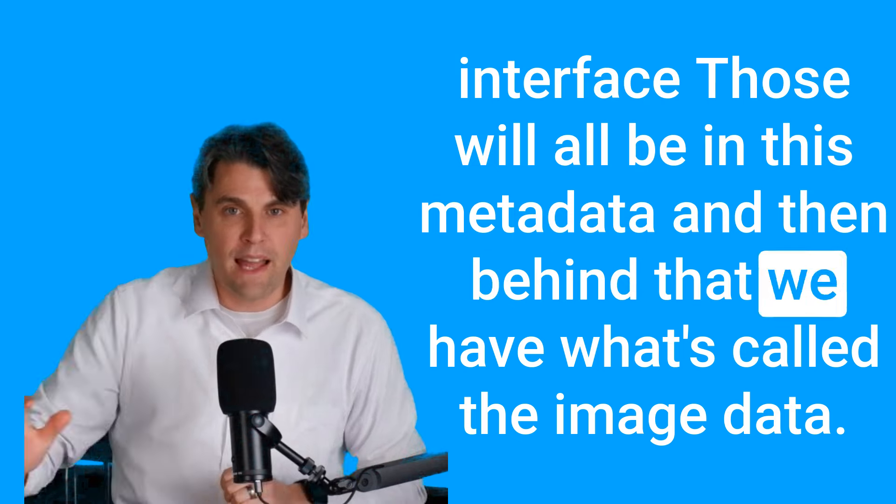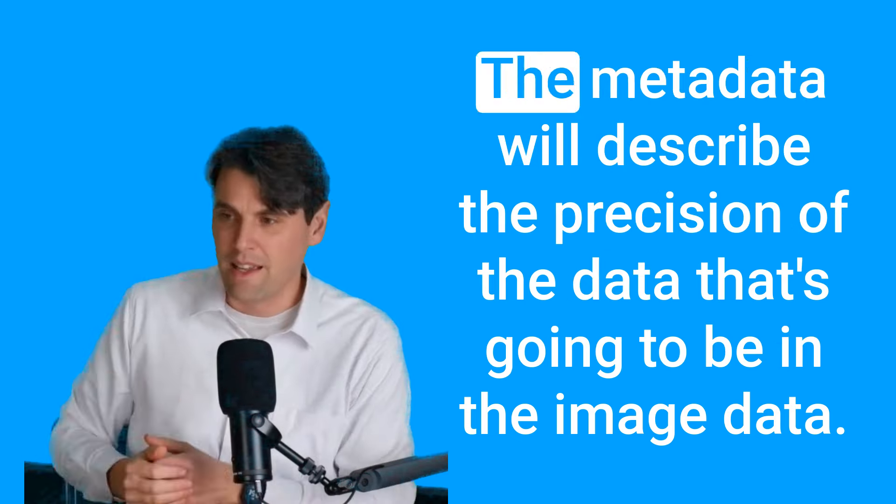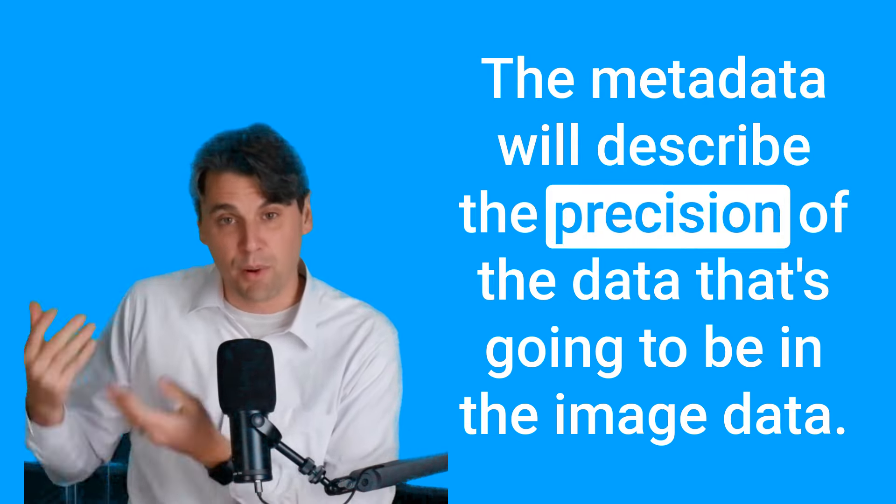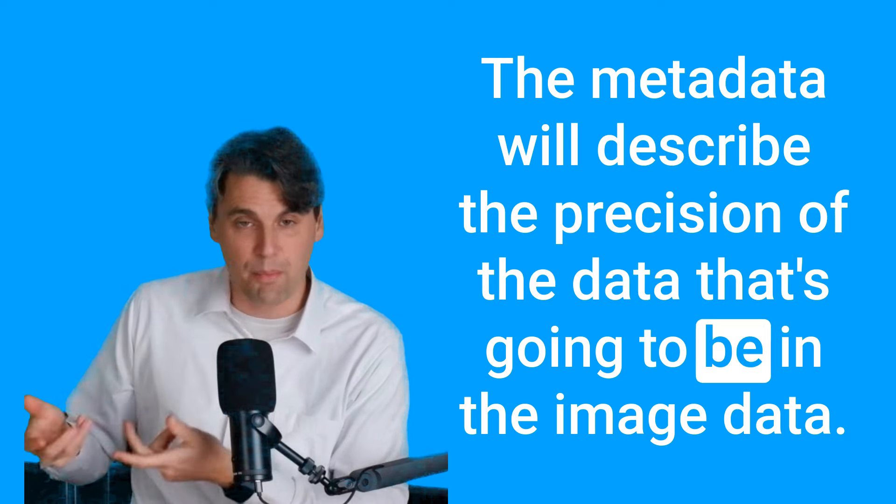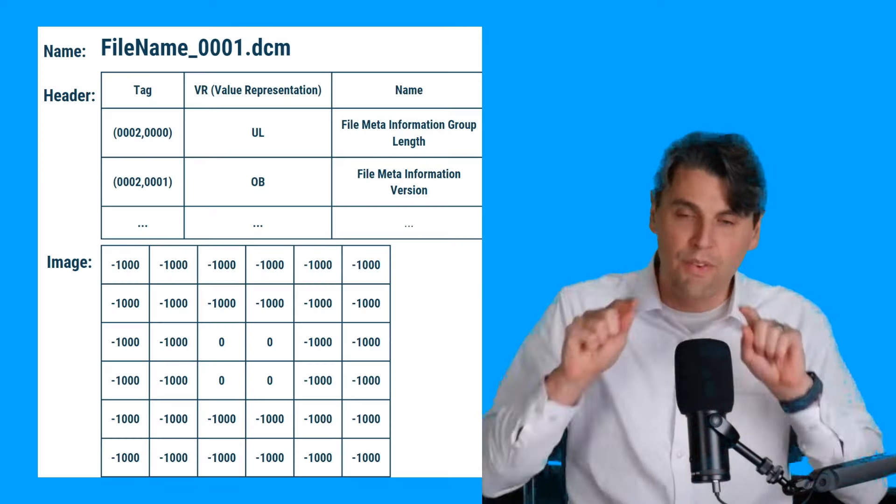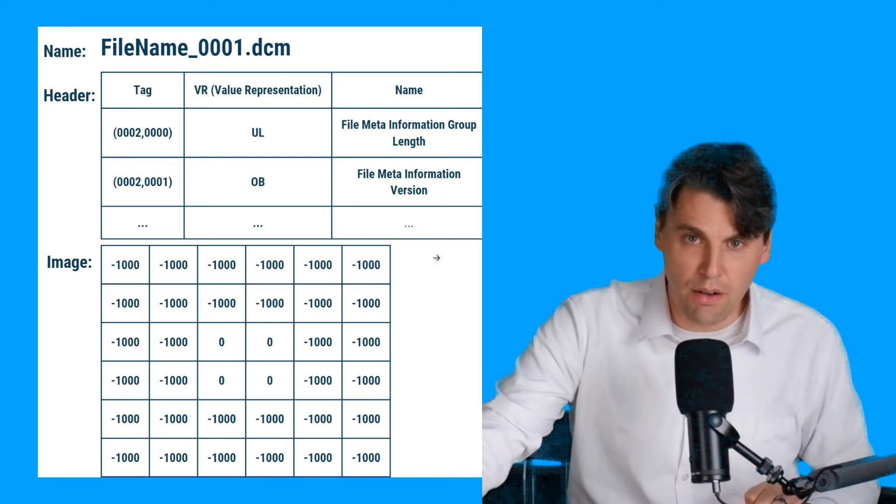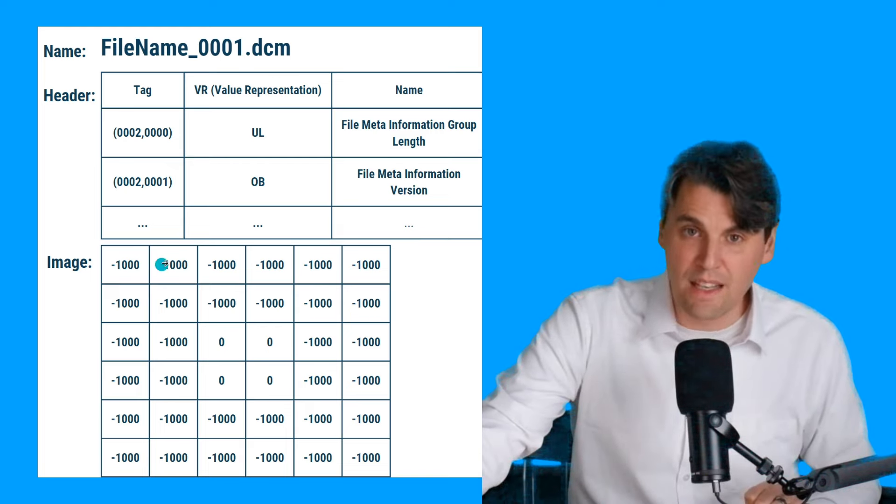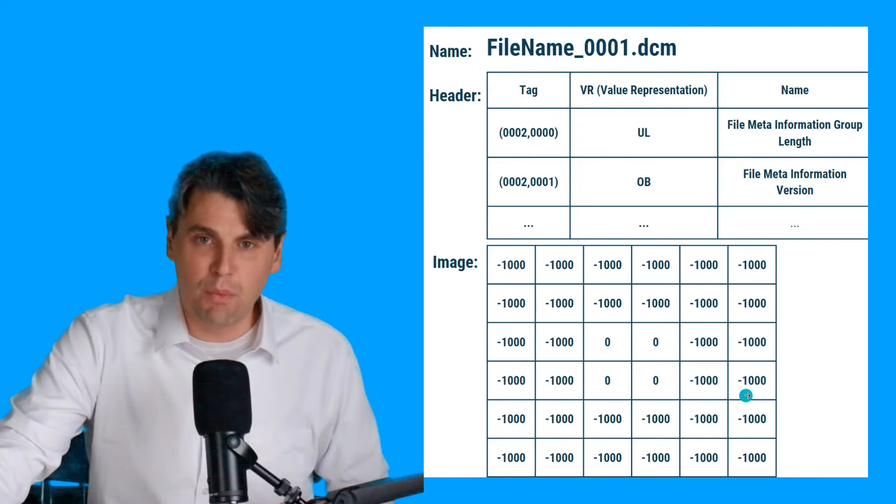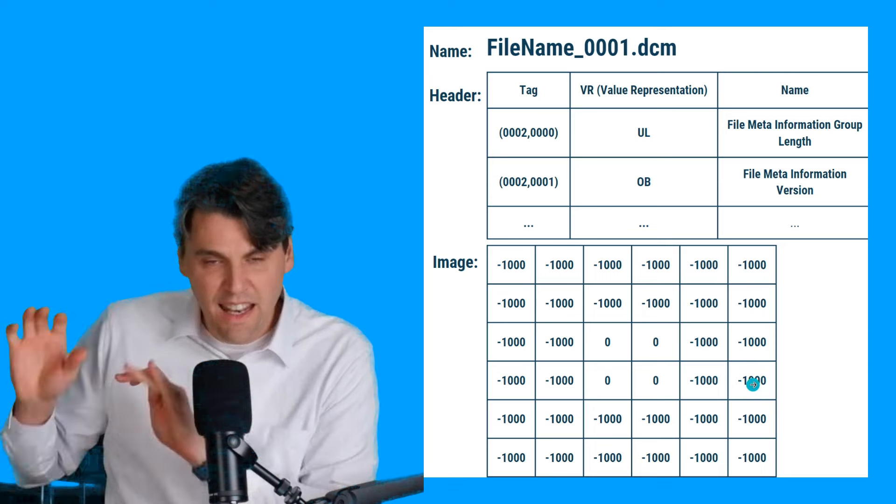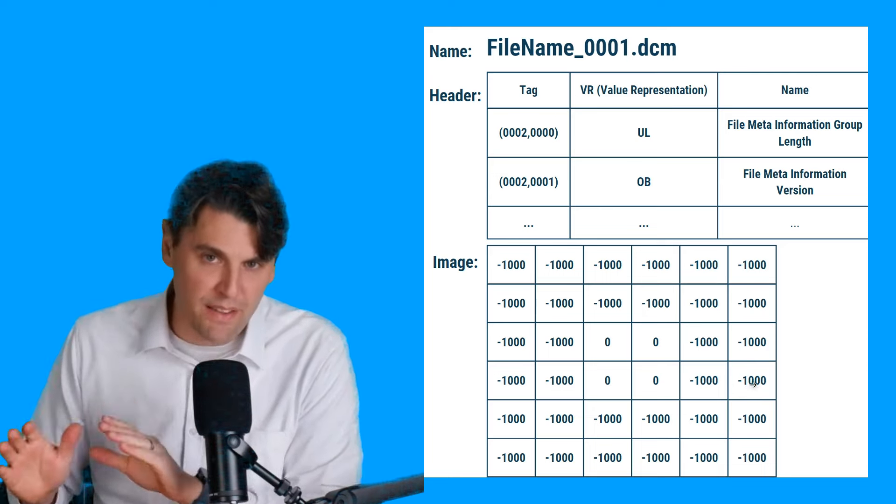And then behind that, we have what's called the image data. The metadata will describe the precision of the data that's going to be in the image data. But then the image data itself is just a two-dimensional matrix. So it's just a 2D array with a number of pixels, and each pixel just has one number in it. This is assuming we had a CT scanner, and it was able to make a perfect image without any noise.